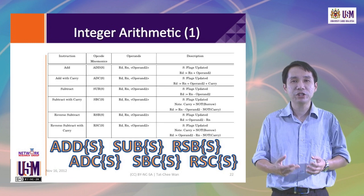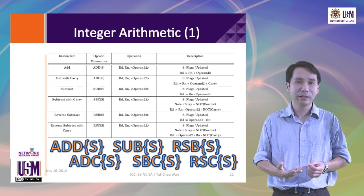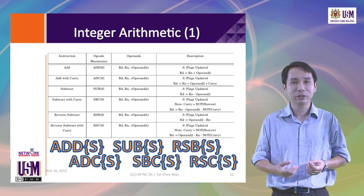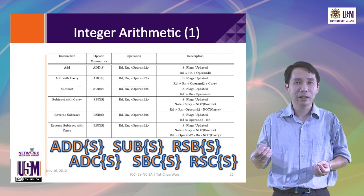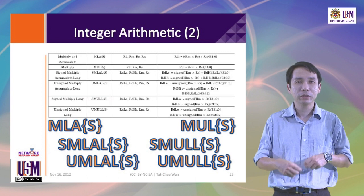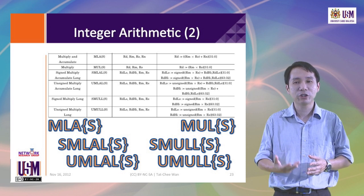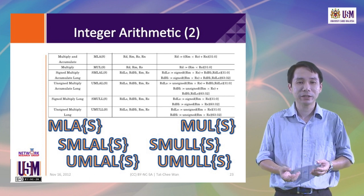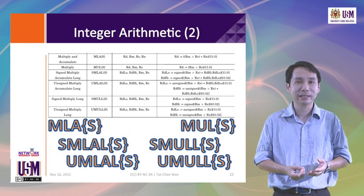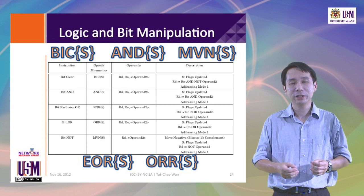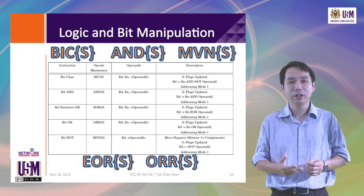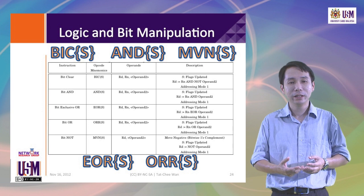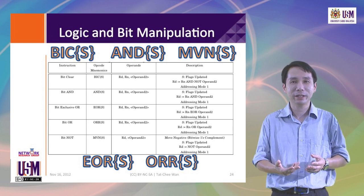The next group are the integer arithmetic instructions: ADD, subtract, reverse subtract, add with carry, subtract with carry, and reverse subtract with carry. We also have multiply instructions: multiply and accumulate, multiply signed and unsigned, and long multiply for signed and unsigned, as well as long multiply and accumulate for signed and unsigned parameters. We also have instructions that deal with logic and bit manipulation: bit clear, AND, exclusive OR, inclusive OR, as well as NOT — which is actually defined as move negative (MVN).